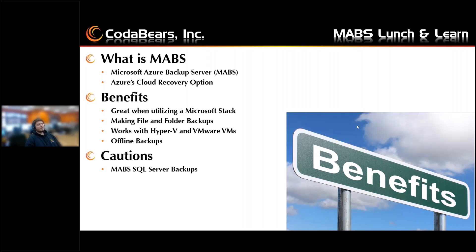Both methods have their pros and cons. The host level backups are flexible because they work regardless of the type of OS running on the guest machines and don't require the installation of the MABS server agent on each individual VM. This will save you money in the cloud, as well as save your network time with backups. If you do deploy the host level backup, you can recover an entire VM or just the files at item level recovery, but you cannot do both.